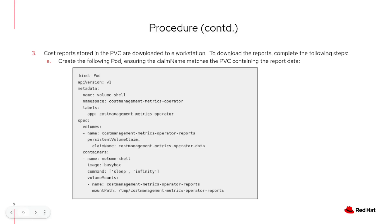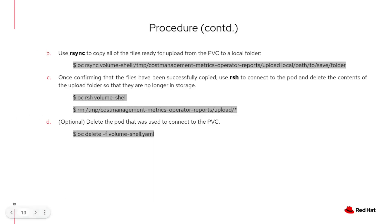Step 3: Cost reports stored in the PVC need to be manually downloaded to a workstation having unrestricted network access for upload to Red Hat console. The default configuration saves approximately one week of reports, which means the process of downloading and uploading reports should be repeated weekly to prevent loss of metrics data. To download the reports, first create the following pod, ensuring that the claim name matches the PVC containing the report data. Next, use RSync to copy all the files ready for upload from the PVC to a local folder. Once confirming that the files have been successfully copied, use RSH to connect to the pod and delete the contents of the upload folder so that they are no longer in storage. Lastly, delete the pod that was used to connect to the PVC.